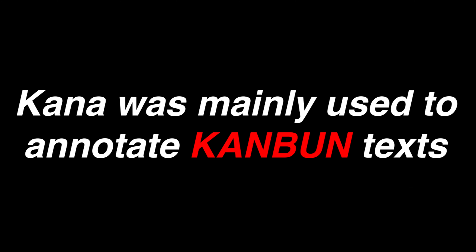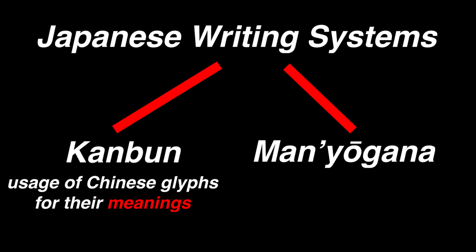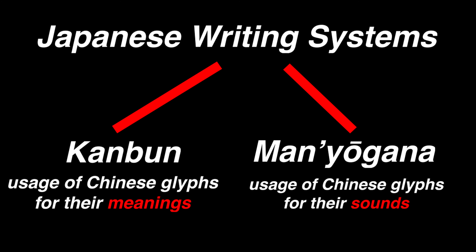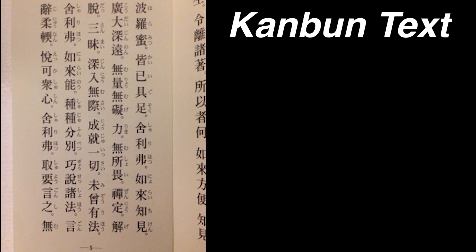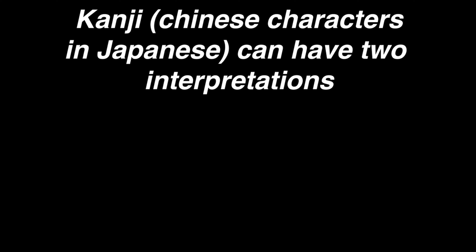At the time, kana was mainly used to annotate kanbun texts. The kanbun system was another way of using Chinese characters alongside Manyogana, and was the usage of Chinese characters to represent the meanings of Japanese words — essentially the same as Chinese, just read in Japanese. Kana would be written atop or beside these characters to give the reader an idea of how to pronounce the character in Japanese. Because of how many Chinese words came into Japanese, kanji had up to two different readings.